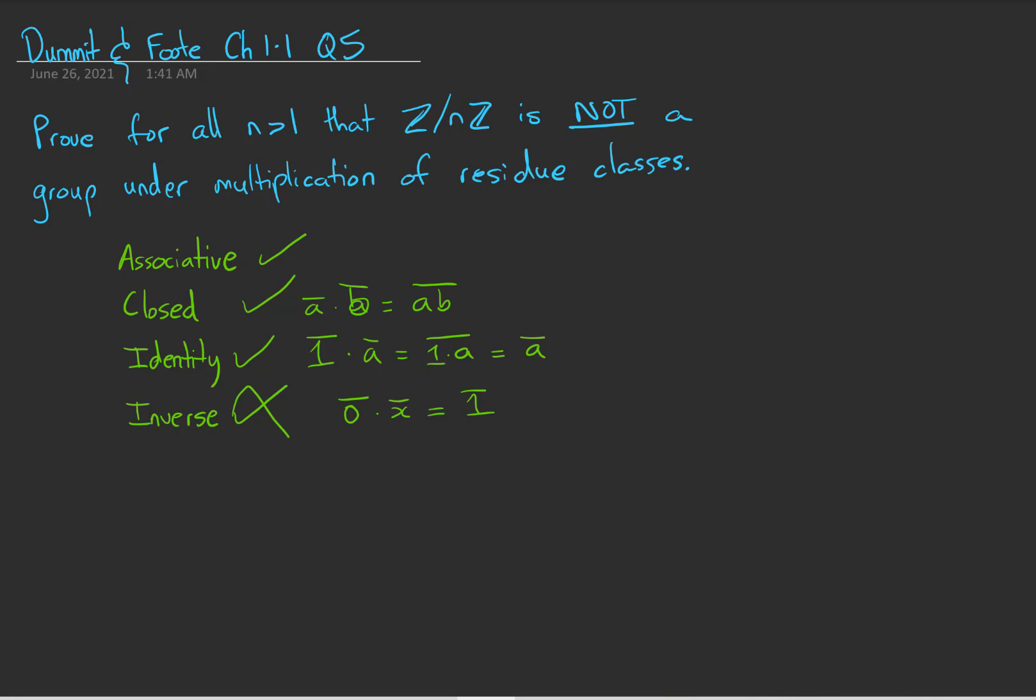it has no inverse. This proves that for all n greater than 1, the set of residue classes is not a group under multiplication.